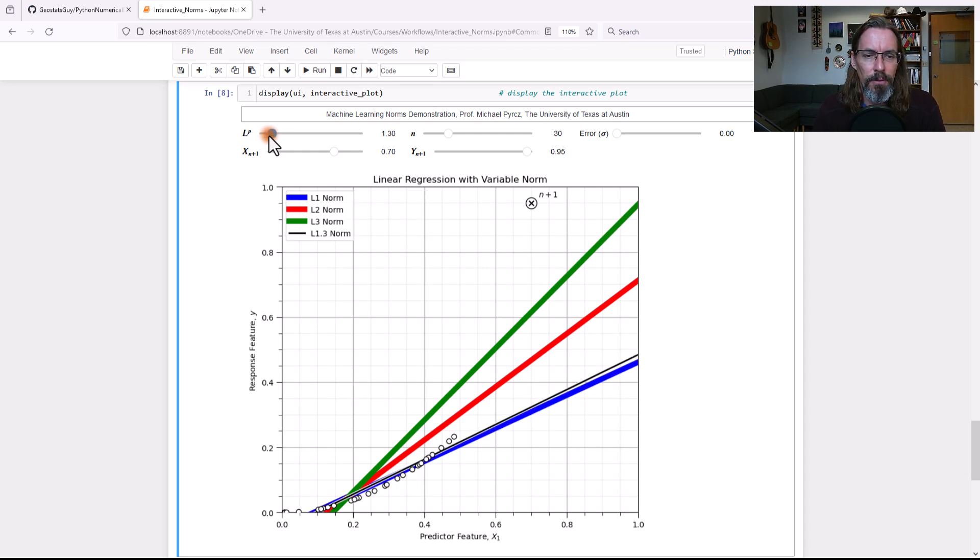We start with almost an L1, just a little bit over L1, L1.5, L1.7. And guess what? When we get to about 2, if I change this to a 2, we're right on top of that red line right there. And we go ahead and increase the norm L2.3, L2.5, L2.7.